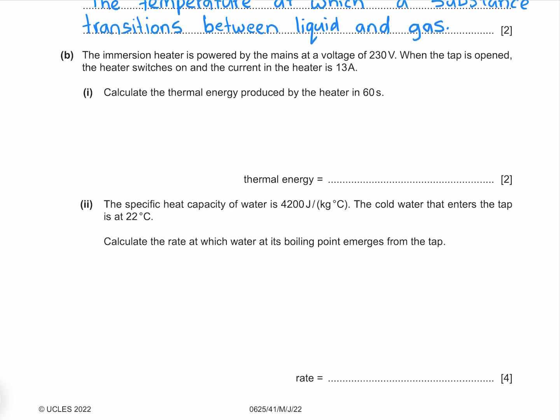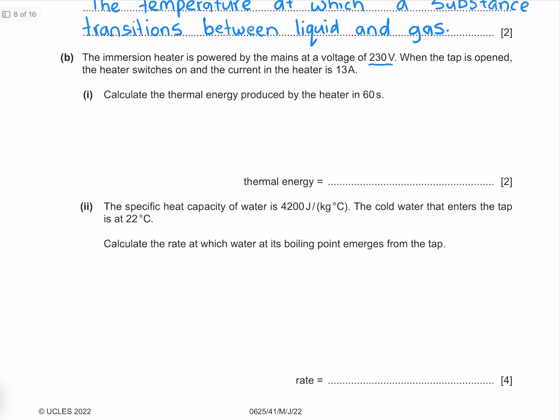The immersion heater is powered by the mains at a voltage of 230 volts. When the tap is opened, the heater switch is on and the current in the heater is 13 amps. Calculate the thermal energy produced by the heater in 60 seconds. We know that power is the change in energy over time, and so we know that the change in energy is the power times the time. Where we also know that power is voltage times current. So if we put in our numbers, I get 1.8 times 10 to the 5 joules to two significant figures.